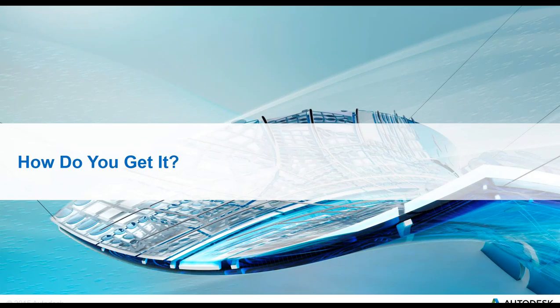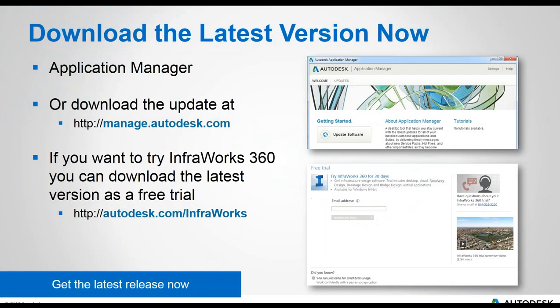To get the latest version if you're not already updated, there are a few ways. If you're a current customer, check your Application Manager — you should find the InfraWorks 360 update listed there to launch installation. If you don't have Application Manager or aren't sure how to use it, go to manage.autodesk.com to download the update. If you're not a customer and want to try InfraWorks 360, you can download the latest version with a free 30-day trial at autodesk.com/InfraWorks.